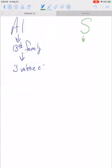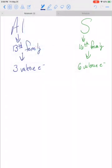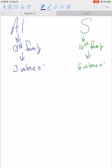Sulfur, on the other hand, is in the 16th family, and so that means that it has six valence electrons. Now, here's the problem. Neither of them have met the octet rule. Remember that the octet rule says in order to be stable, they need eight valence electrons.